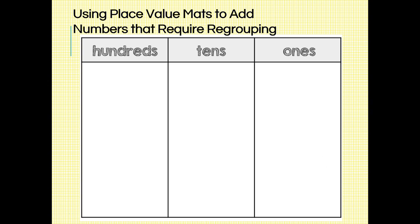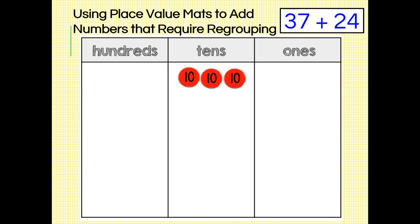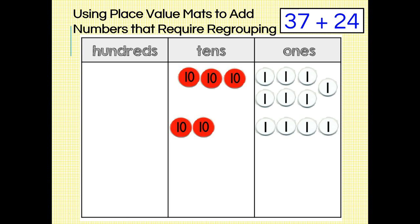The first problem is 37 plus 24. We will first lay down place value disks to represent our addends. So let's put down three tens disks and seven ones disks for 37, and two tens disks and four ones disks for 24.